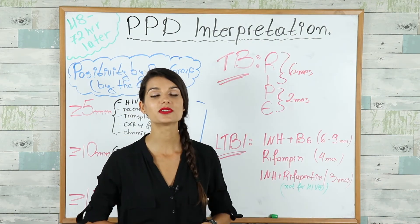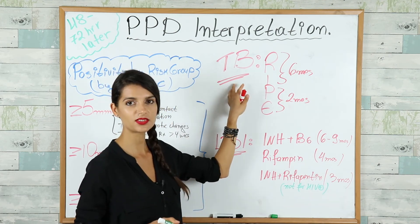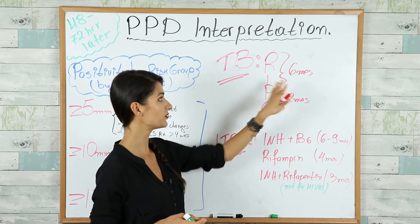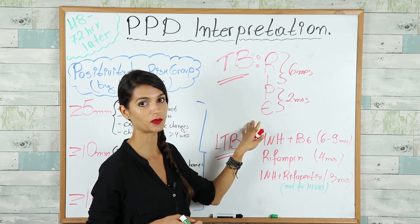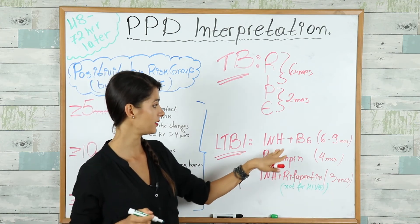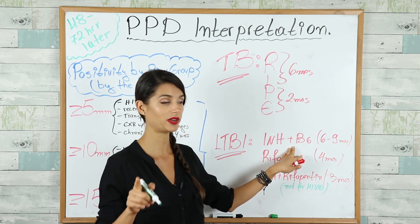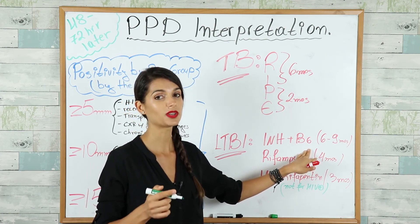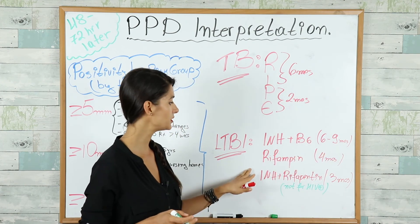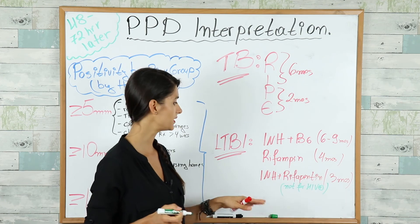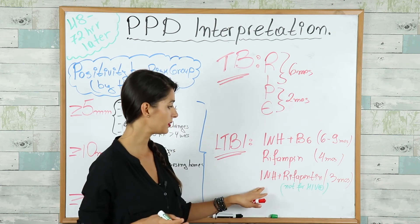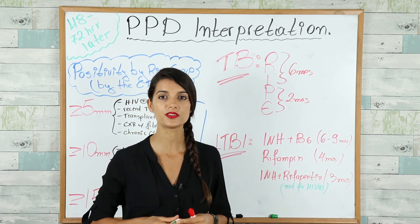For active TB infection, treat with the mnemonic RIPE: rifampin and isoniazid for six months, plus pyrazinamide and ethambutol for the first two months. For latent TB infection, there are three options: isoniazid (INH) plus vitamin B6 (pyridoxine) for six to nine months to prevent peripheral neuropathy; rifampin for four months; or isoniazid plus rifapentine for three months under a doctor's supervision — noting that the last option is not recommended for HIV-positive patients.